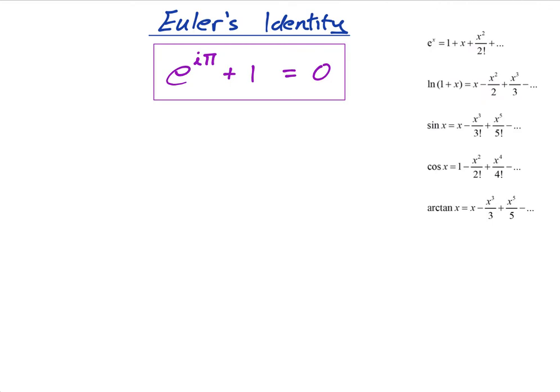So, let us start with, I'm going to start with e to the x. Consider e to the x, we have e to the x is equal to 1 plus x plus x squared over 2 factorial plus x cubed over 3 factorial plus x to the 4 over 4 factorial plus etc. Fine.